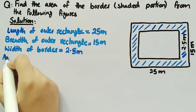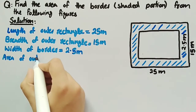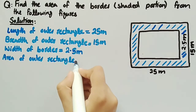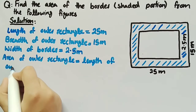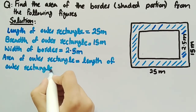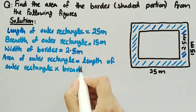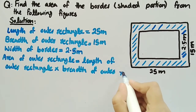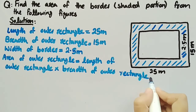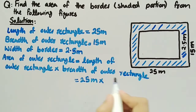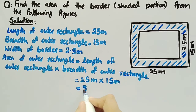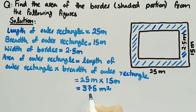Firstly, let's find the area of the outer rectangle, which is equal to length multiplied by breadth. By substituting the values, we get length of outer rectangle 25 meters multiplied by breadth of outer rectangle 15 meters. Multiplying 25 by 15 we get 375 meter square, so area of outer rectangle is 375 meter square.